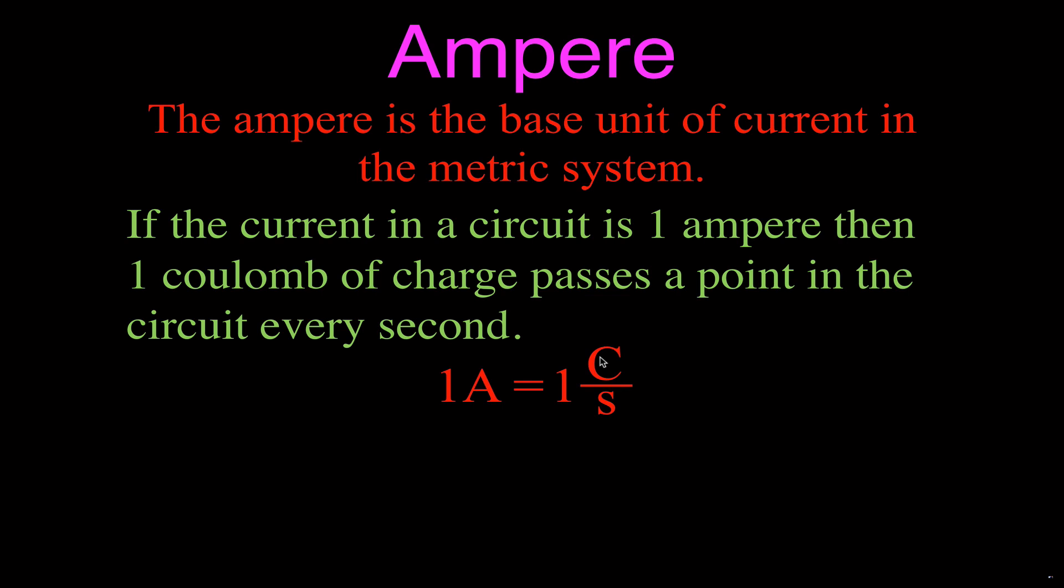An ampere is a coulomb per second, it's a coulomb of charge per second. Remember more symbols here: Q is a symbol for charge and charge is measured in coulombs, and the abbreviation or the symbol for coulombs is a C. This is like saying one ampere is equal to one coulomb of charge per second.